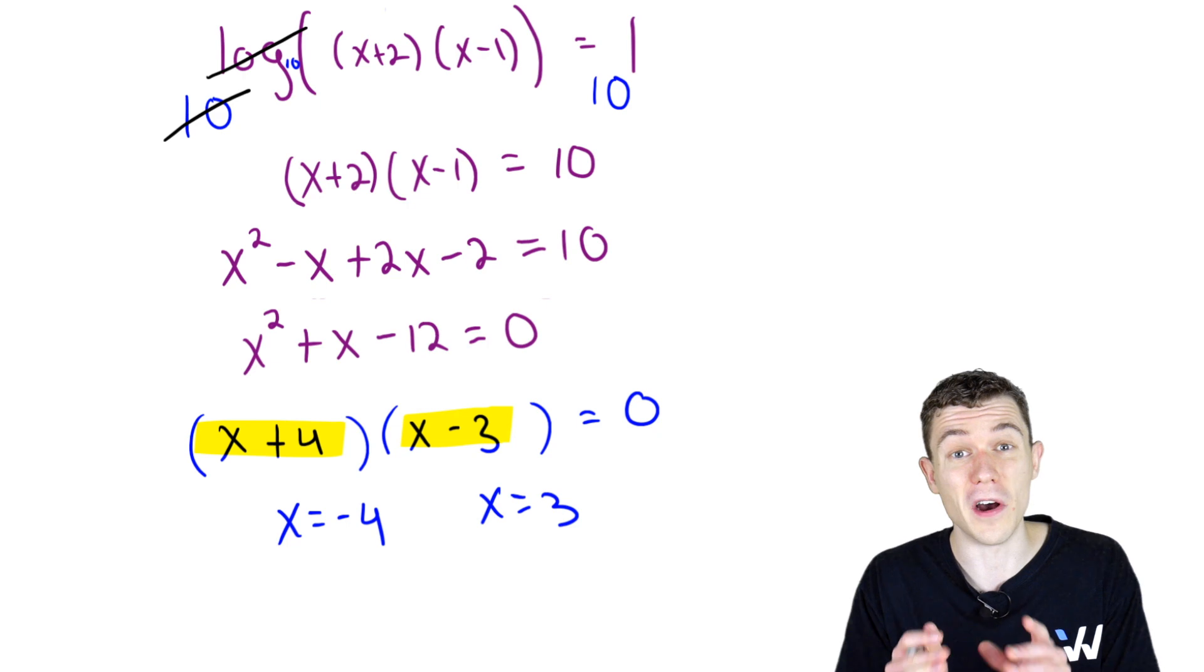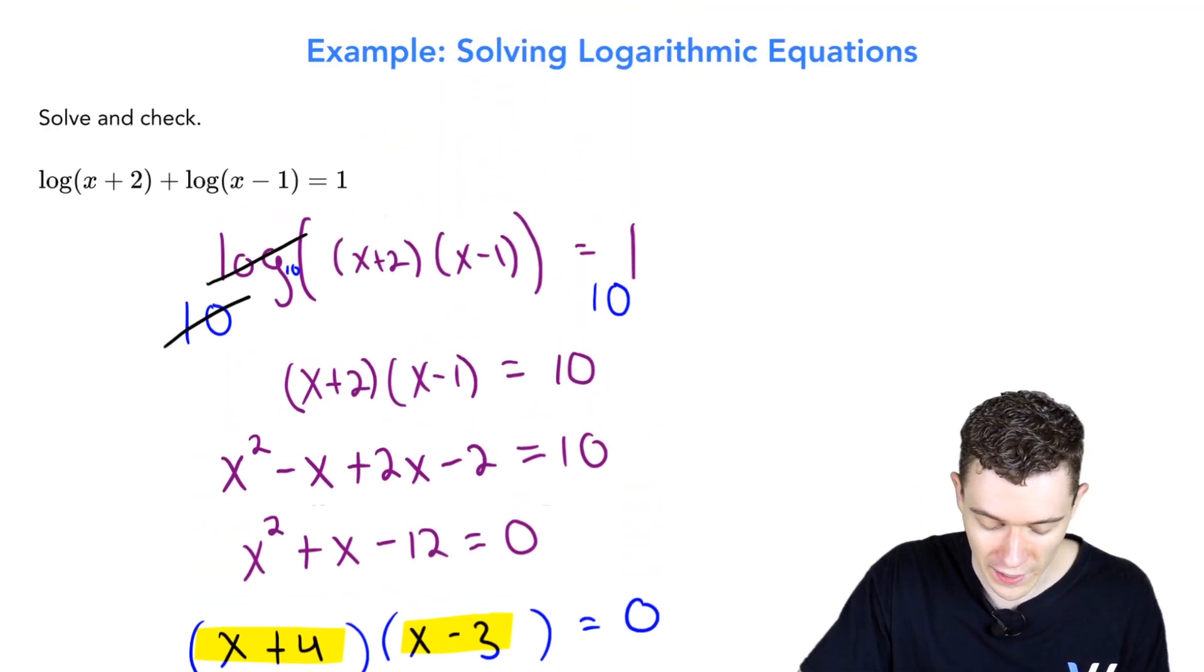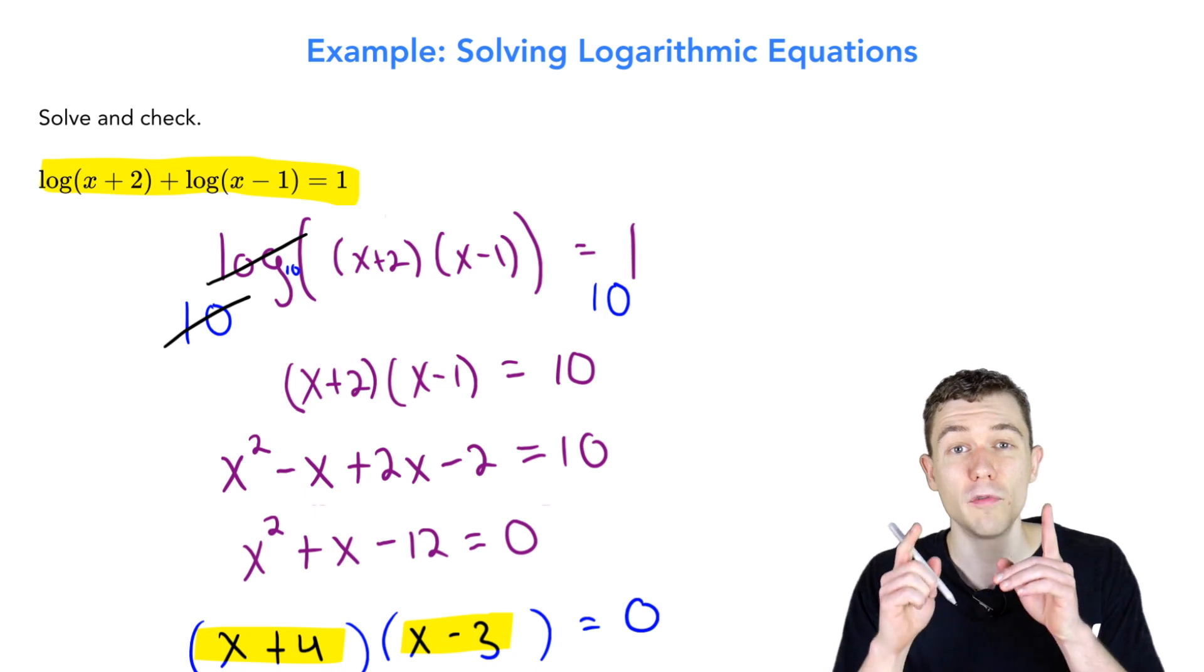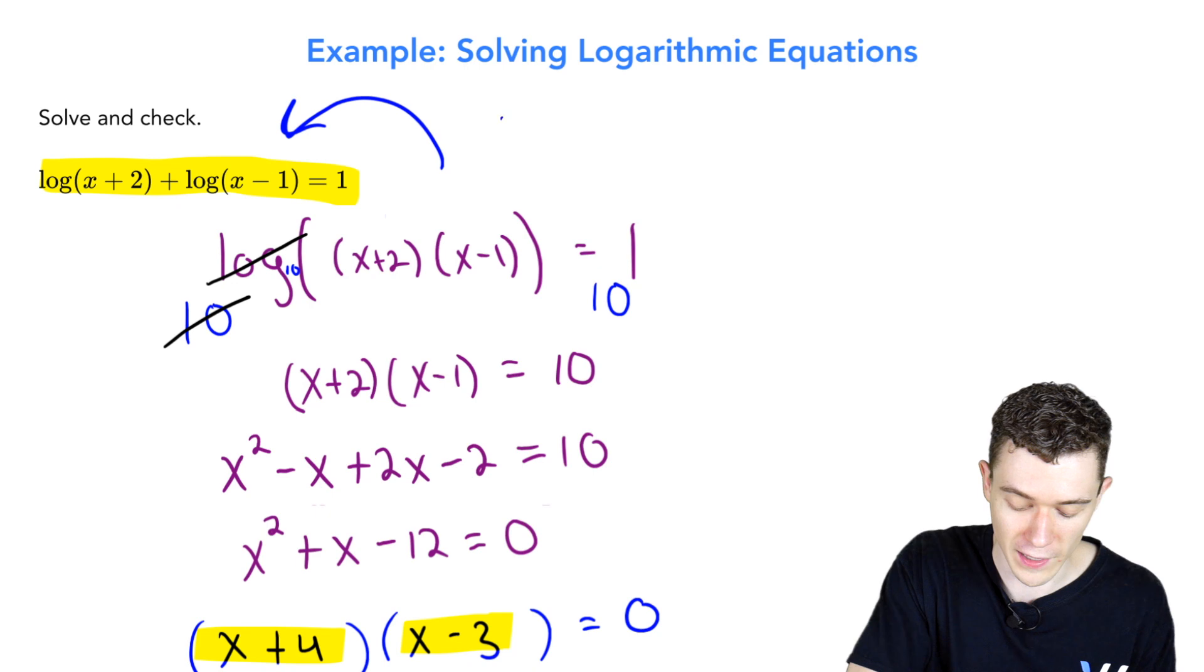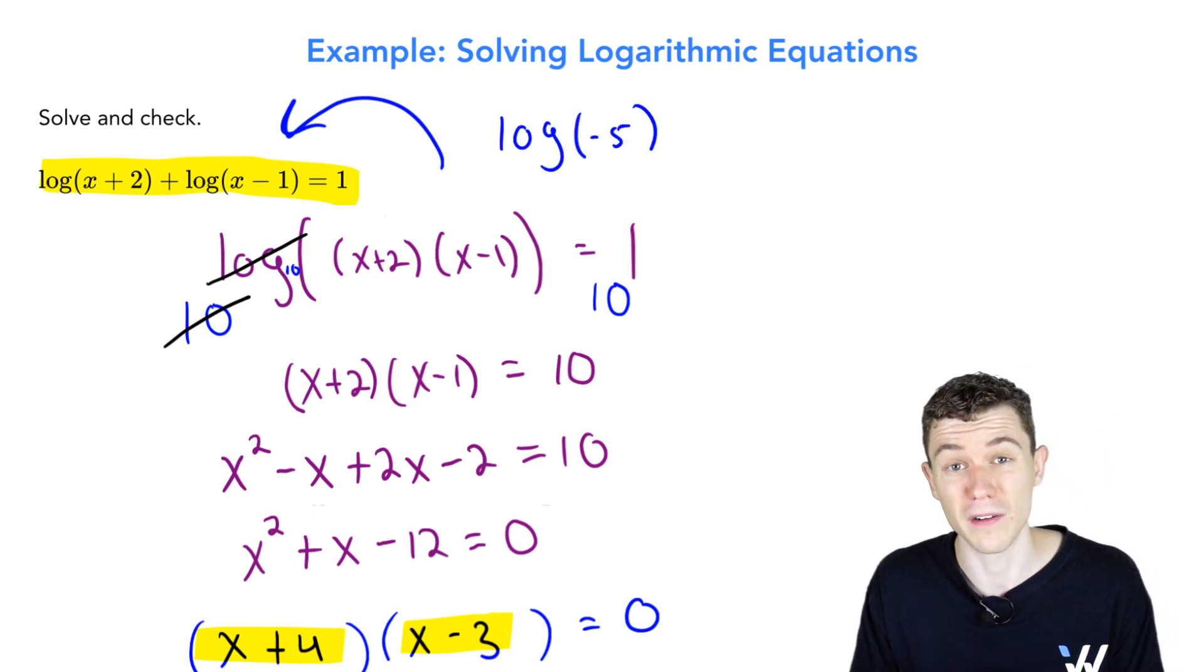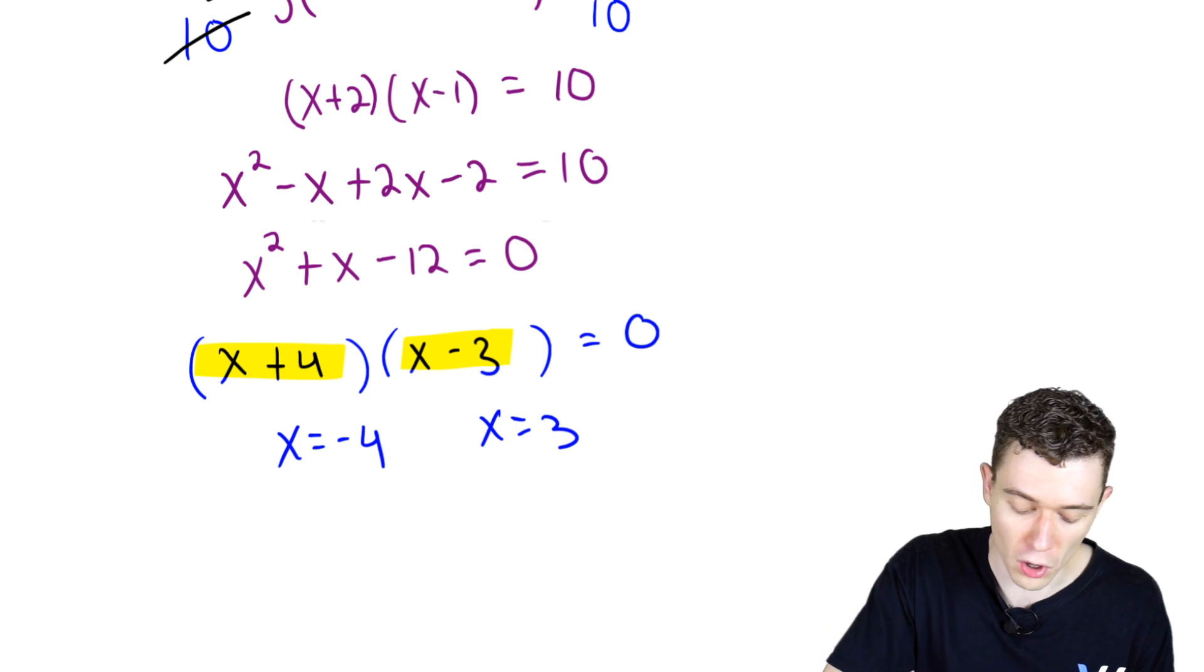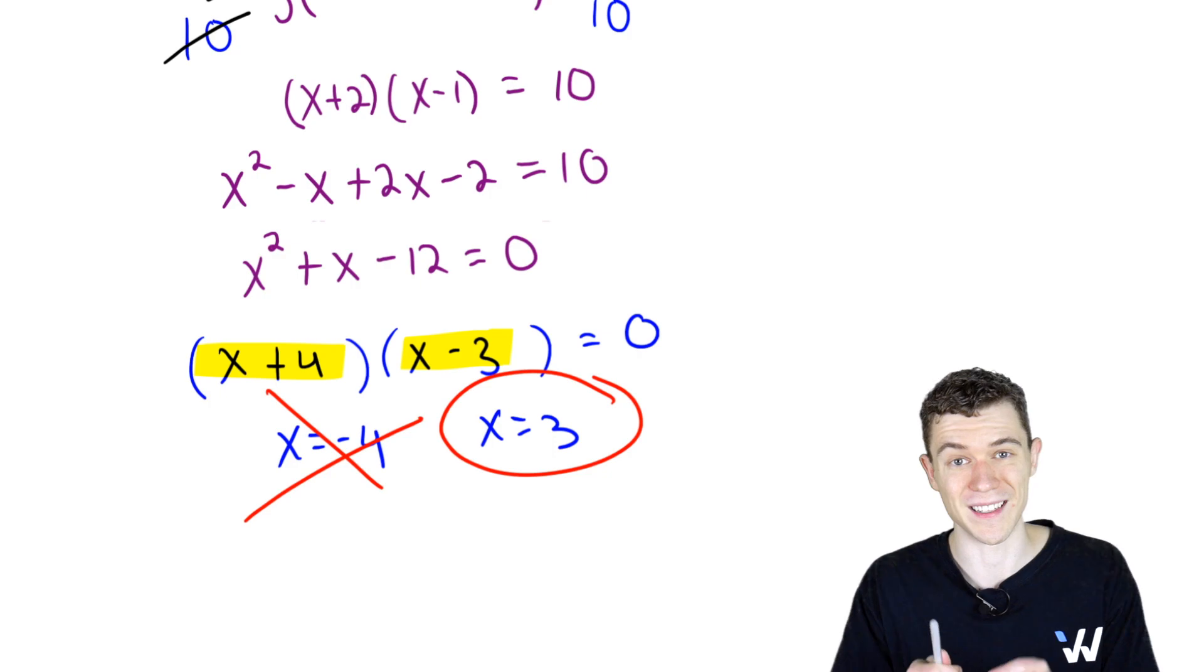Now, are we done? No, we have to check these answers. We have to plug in negative 4 and 3 into the original equation. And 3 is fine. No problems there. But if we plug in negative 4, well, we would be taking the log of a negative. That would be log of negative 5 if we were to plug in negative 4. And that's not allowed. We can't take logarithms of negative numbers. So negative 4 is a so-called extraneous root. We throw it away. Our only answer is x equals 3.